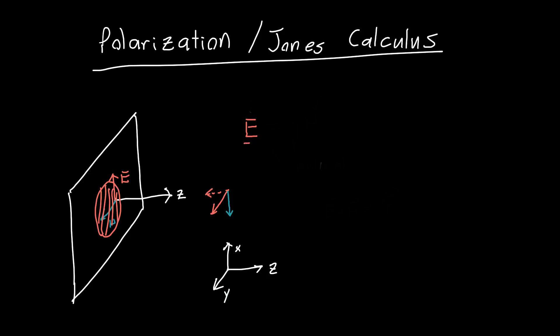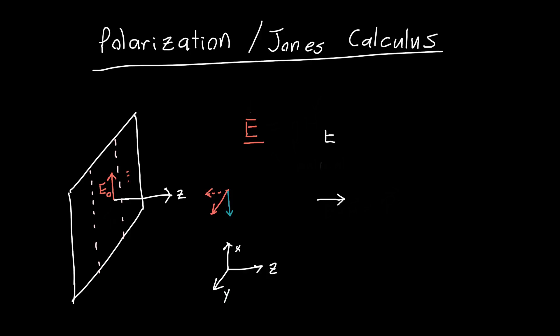This is all we need to worry about in order to fully understand polarization. So how do we go about representing polarization? Let's say we know the direction of propagation of the plane wave is along the z axis. The electric field can be anywhere in this plane, so let's say it's pointing in the x direction with amplitude e0. Mathematically, the electric field is a vector pointing in the x-hat direction with amplitude e0, written as a traveling wave: e to the j(omega t minus kz).